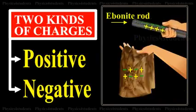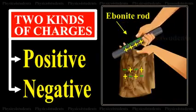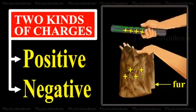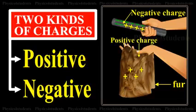Secondly, when an ebonite rod is rubbed with fur, it becomes negatively charged, while the fur acquires an equal amount of positive charge.